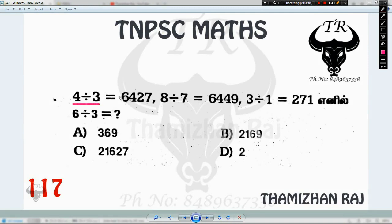4 times 3, each one is a place, 64, 20. 8 times 7, each one is a place, 64, 24, 25. 3 times 1, each one is a place, 20, 21. 6 times 3, each one is a place. That's a question.